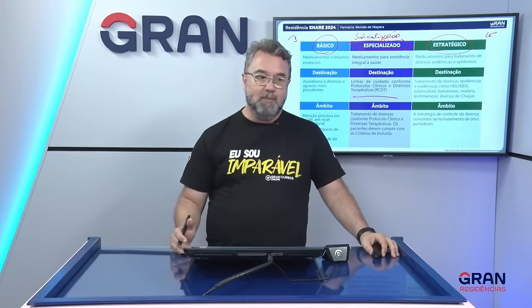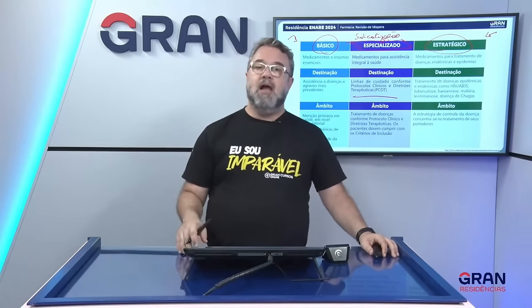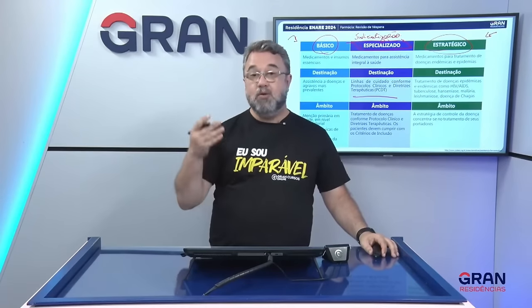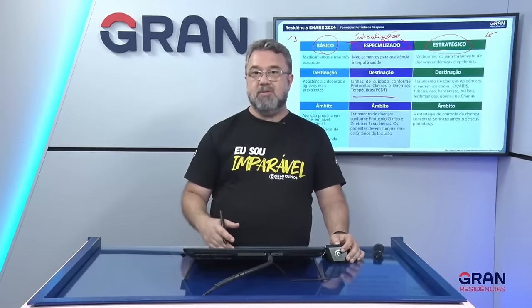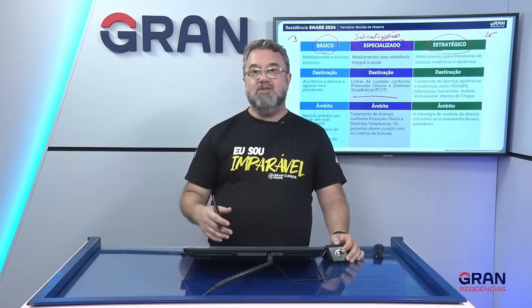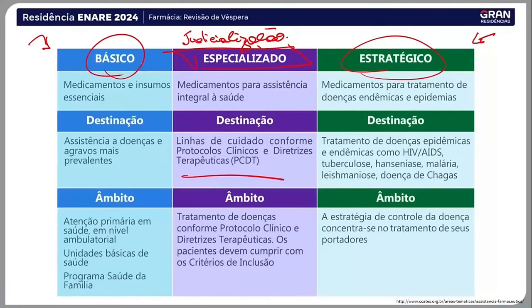O componente especializado sofre hoje muito mais ações de judicialização porque são medicamentos de valores agregados altos. A incorporação acontece após publicação em diário oficial; aí você tem o PCDT no componente especializado. O componente básico trata doenças e agravos mais prevalentes na rotina do cuidado de saúde. O componente estratégico é totalmente centralizado — a aquisição é feita diretamente pelo Ministério da Saúde e encaminhada às secretarias estaduais, para tratamentos que visam evitar endemias e epidemias. As vacinas e soros antiofídicos pertencem ao componente estratégico.